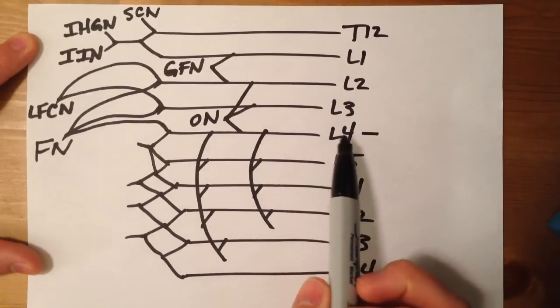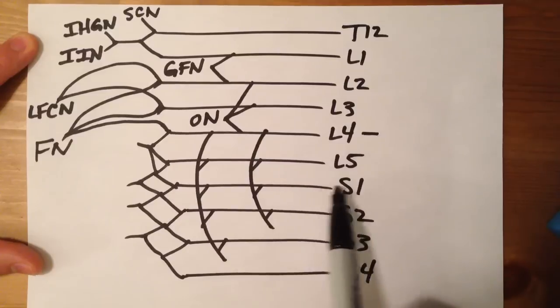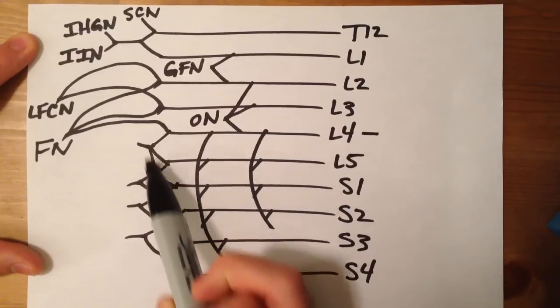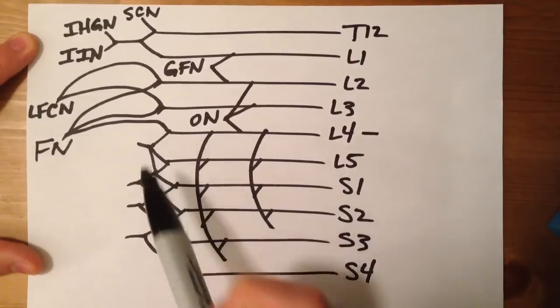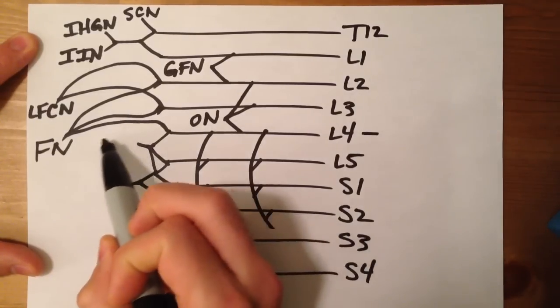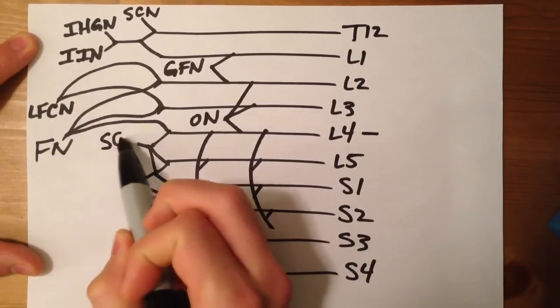Now between L4 and S1, because there's that little branch that connects to S1, that is going to be your superior gluteal nerve.